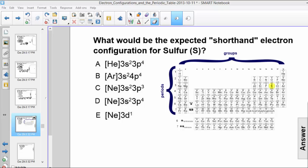Keep in mind that when you write shorthand configurations, the first thing you need to do is write the symbol for the noble gas that precedes the element you're interested in. Then you'd add the remaining electrons by starting at the s orbital of the level that the element is in until the configuration is complete.